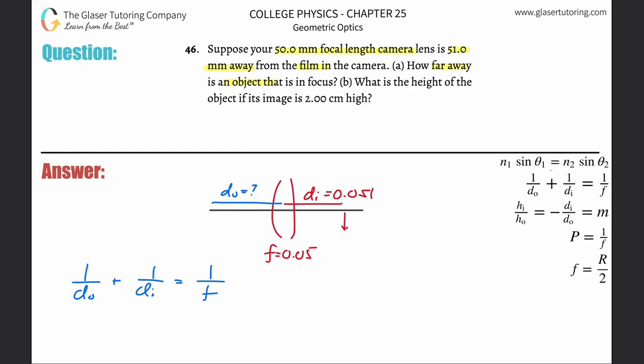I want to solve for do, so simply move this over to the right hand side. You can cross multiply. Bring this whole thing out of the denominator, then bring this whole thing on down. Now plug it all in: one divided by one over the focal length of 0.05 minus one over 0.051.